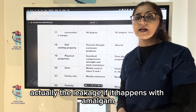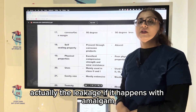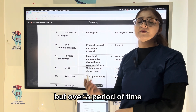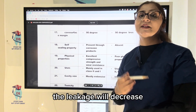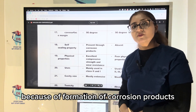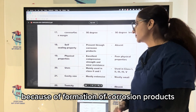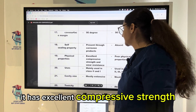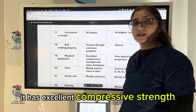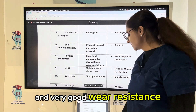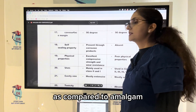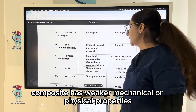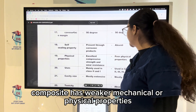With amalgam, leakage may occur more in the initial phase, but over time the leakage decreases because of formation of corrosion products. Amalgam has excellent compressive strength and very good wear resistance. Compared to amalgam, composite has weaker mechanical or physical properties.